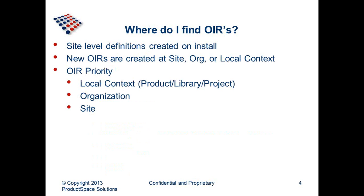So the question is, where do I find them? By default, when you install Windchill, each object type in the system will have an OIR established for it at the site level. Those will filter down, and new OIRs can also be created at the site or local context level — that would be anything from product, library, or project. When you create a new object, the system first looks for a local context level OIR. If it doesn't exist, it goes to the organization level and then lastly to the site level. Anything created at the product or library level will override anything at higher levels.